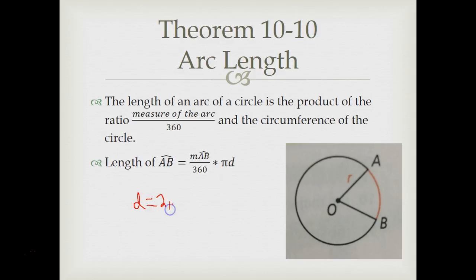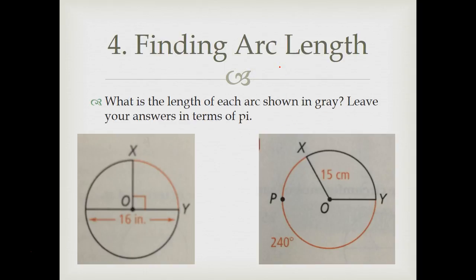The length of an arc of a circle is the product of the ratio, so you measure the arc divided by 360 and the circumference of the circle. The length of this arc is the measure of that arc in degrees outside of 360. So it's kind of like a ratio, like a third of the circle, a fourth of the circle, an eighth of the circle times pi times diameter. Remember your diameter could also be 2r.